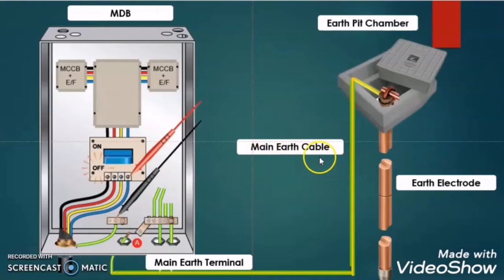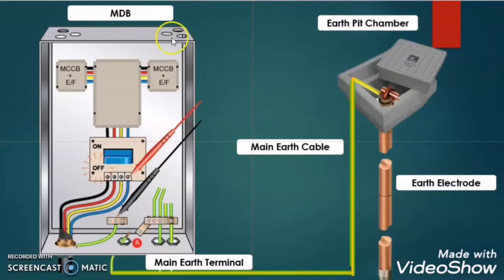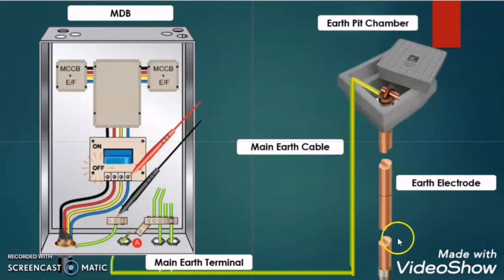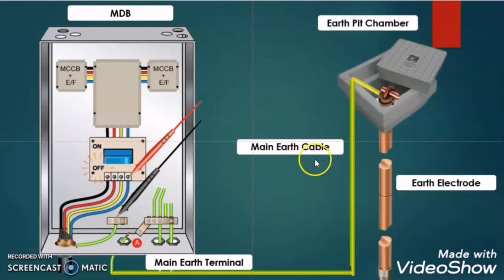Before sizing of the main earth cable, let us understand some terms. The MDB stands for main distribution board, and this earth terminal of the MDB is called the main earth terminal. This is the earth pit chamber and this one is the earth electrode, which is giving intimate contact with the earth or ground. This cable which is connecting the main earth terminal and the earth electrode is called the main earth cable.